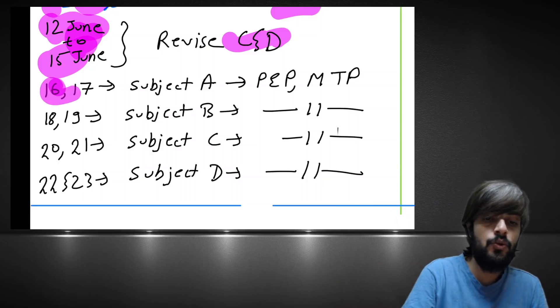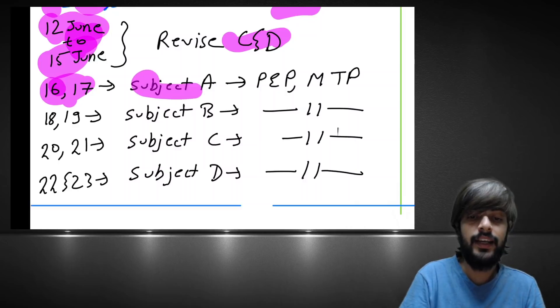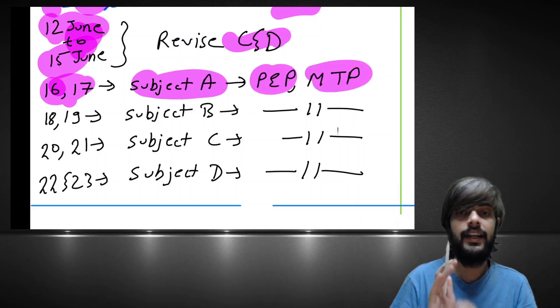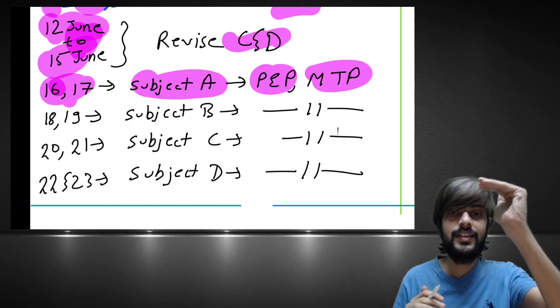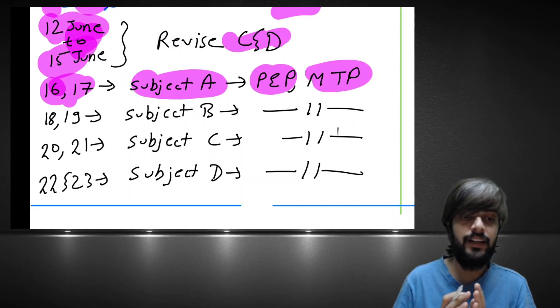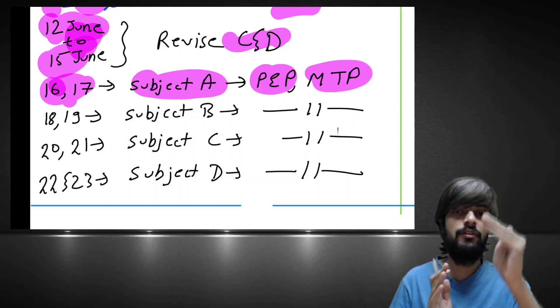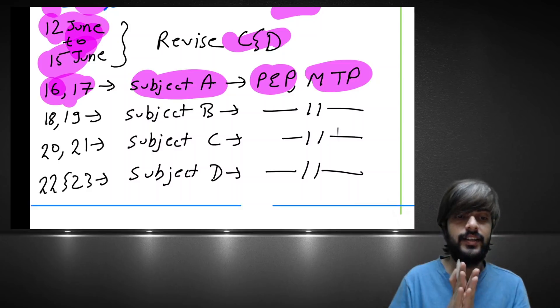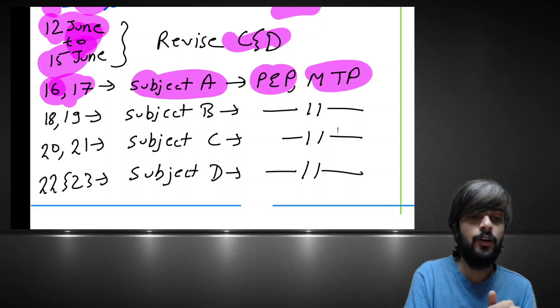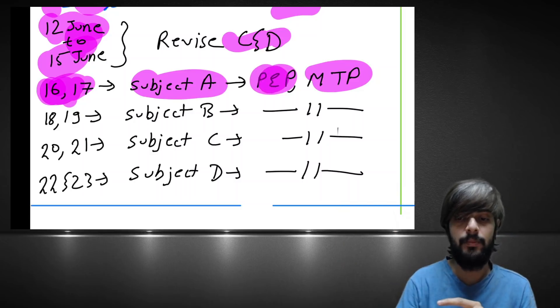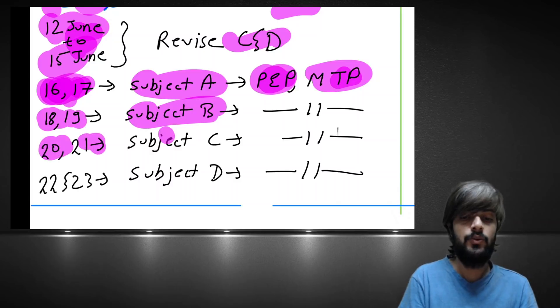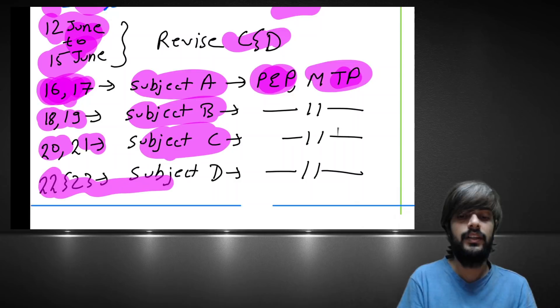Now from 16th June to 17th June, you again revise the subject A. And make sure this time you do past exam question paper and MTP. Because when you were studying 100 hours, we were completing the study mat. Then again when you were revising it for 20 hours, we were mostly completing study mat. And if you want workbook or else stick to the study mat only. Then in the third time when we are doing, that time we will touch only past exam question paper and MTP. So from 16th and 17th, you can do subject A, 18, 19, you can do subject B, 20, 21, you can do subject C, 22, 23, you can do subject D.